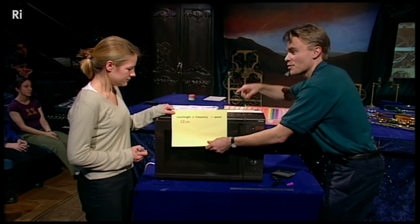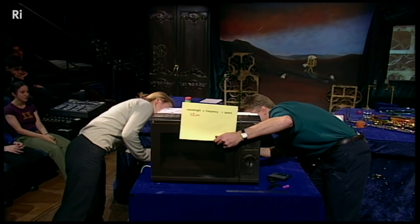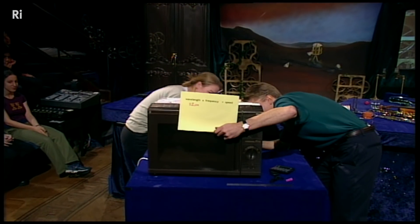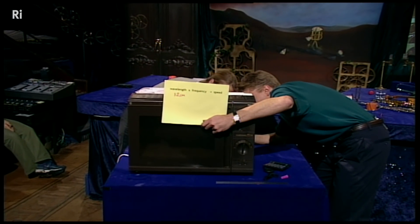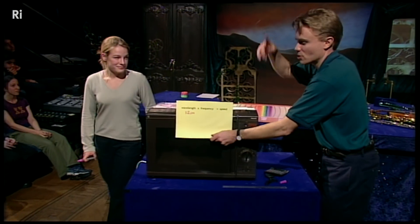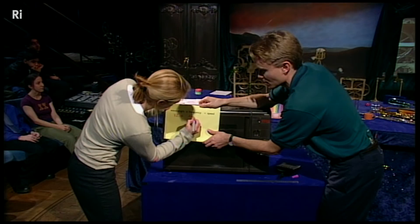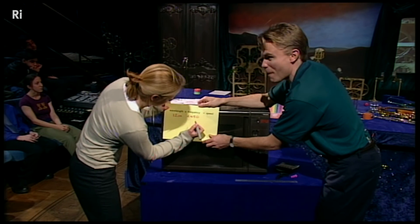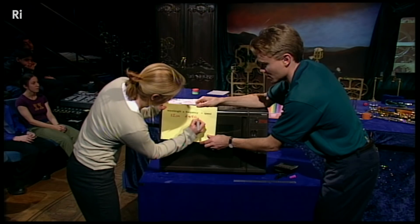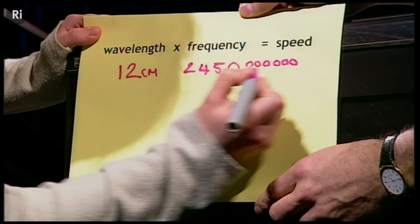Now we need the frequency. The frequency is on the back. Come around and have a look with me. Come and have a look here. It says 2450 megahertz. Now megahertz is a million hertz. A million oscillations per second. So let's write down 2450. Now we need to put a million after it. So it's six zeros. That's great.